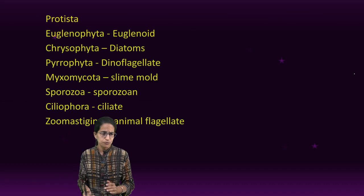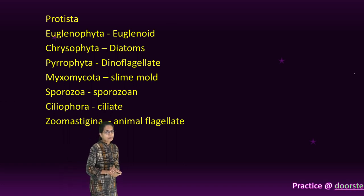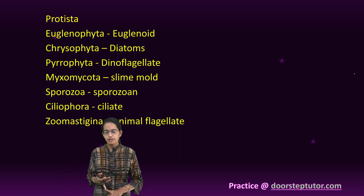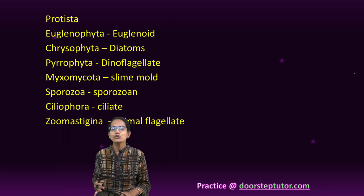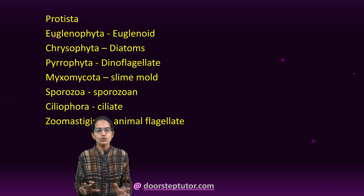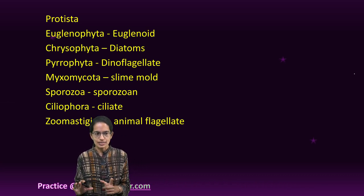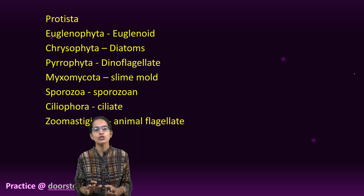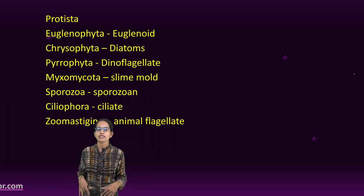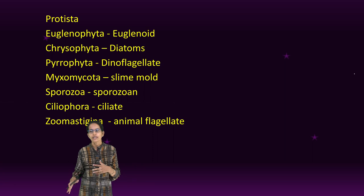The next kingdom is Protista. Protista is unicellular, usually colonial, and eukaryotic, meaning the nucleus is well defined. The method of ingestion could be parasitic, holozoic, or photosynthetic in nature.